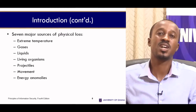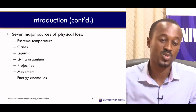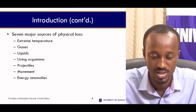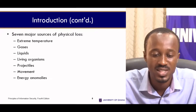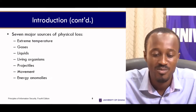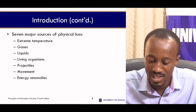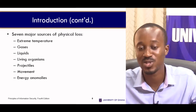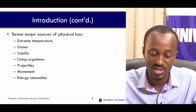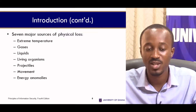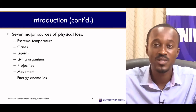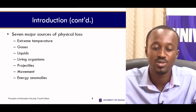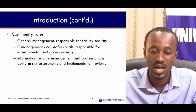There are seven major sources of physical loss. The first one has to do with extreme temperature. Then we have gases, liquids, living organisms, projectiles, movement, and energy anomalies. We can have physical loss through any of these seven categories.